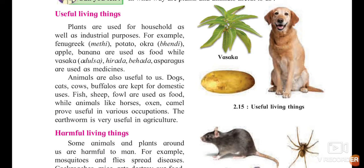Dogs, cats, cows, and buffalo are kept for domestic uses. Dogs guard our house, cats help us to kill rats, and cows and buffalo give us milk. Fish, sheep, and fowl are used as food.